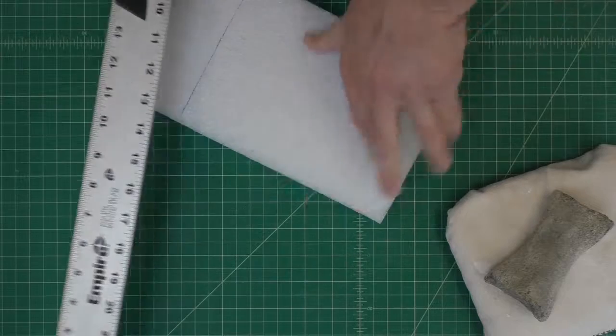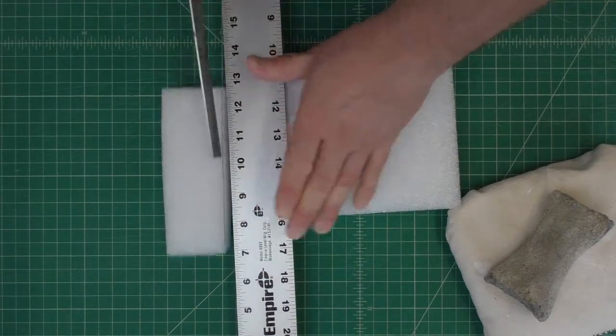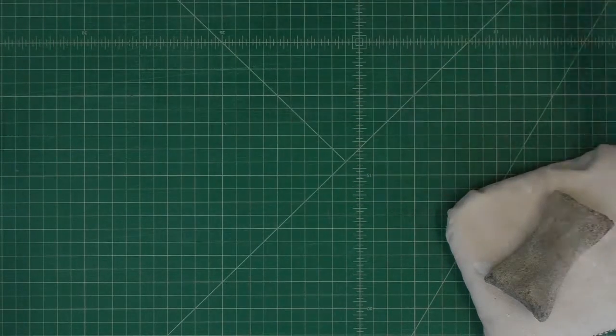Choose a thickness of ethafoam that's right for the size, weight, and fragility of your specimen. For cavity mounts, you need a bed that's at least a half an inch thick.